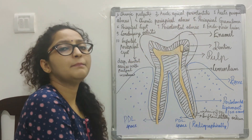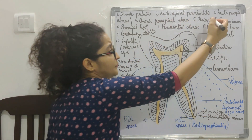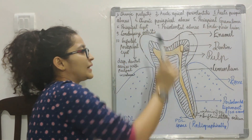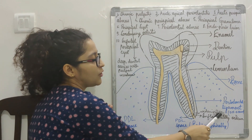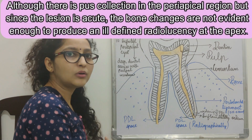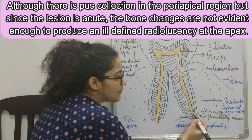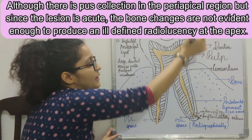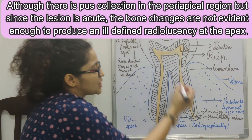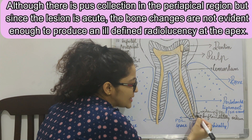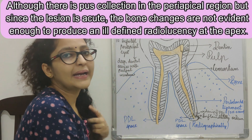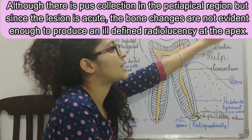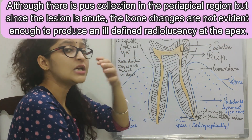Coming to acute periapical abscess — even in acute periapical abscess, you will see widening of periodontal ligament space with or without loss of lamina dura, because there will be collection of pus in this region. The lamina dura might be broken. So you see the same radiographic features in both acute apical periodontitis and acute periapical abscess.